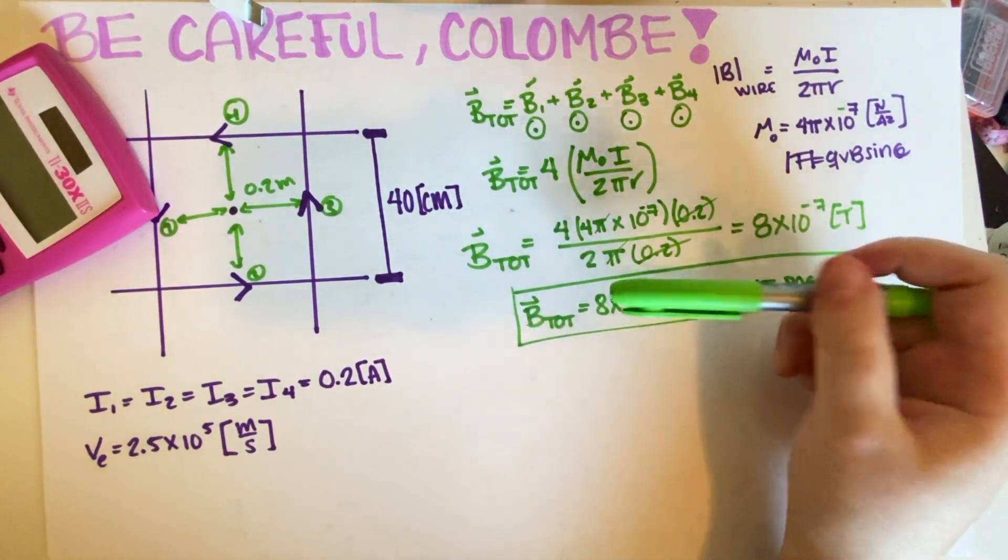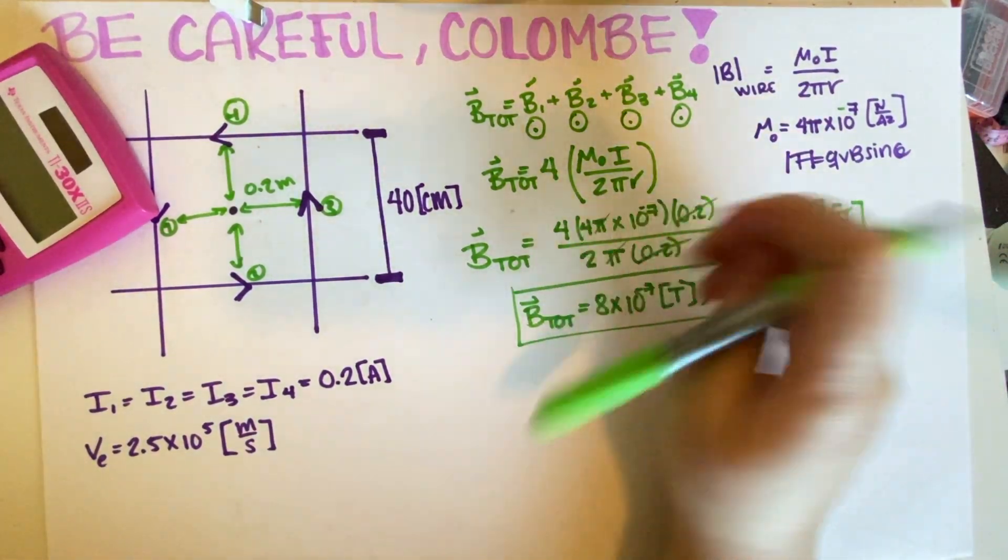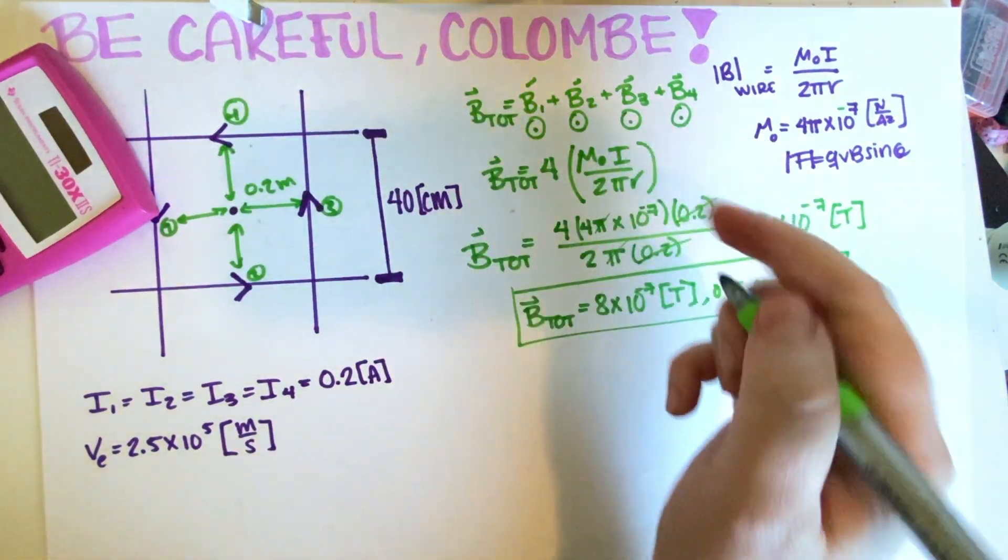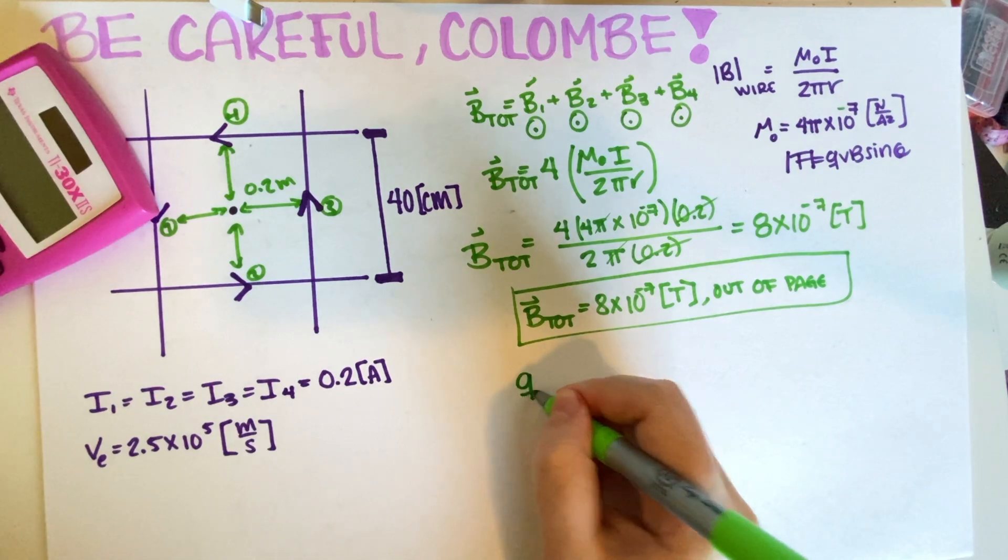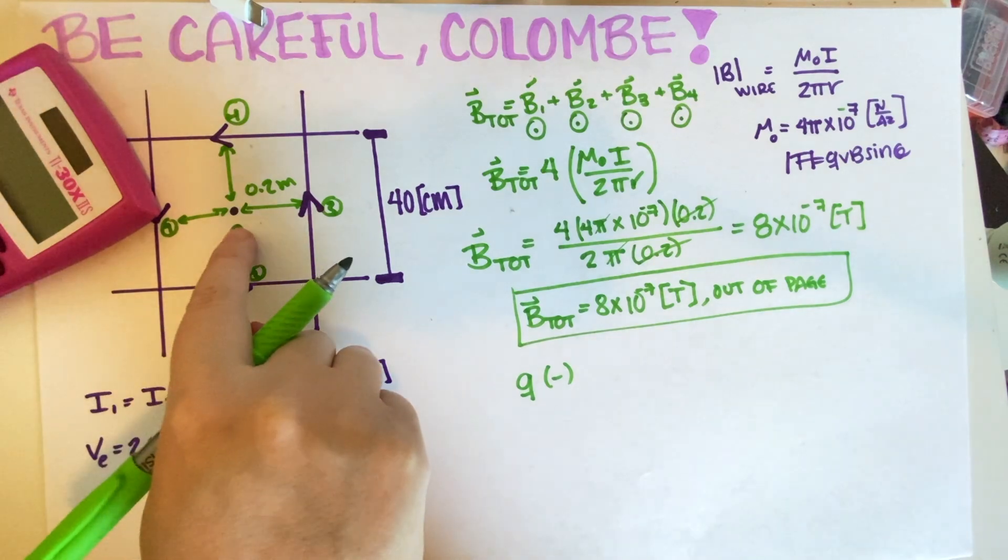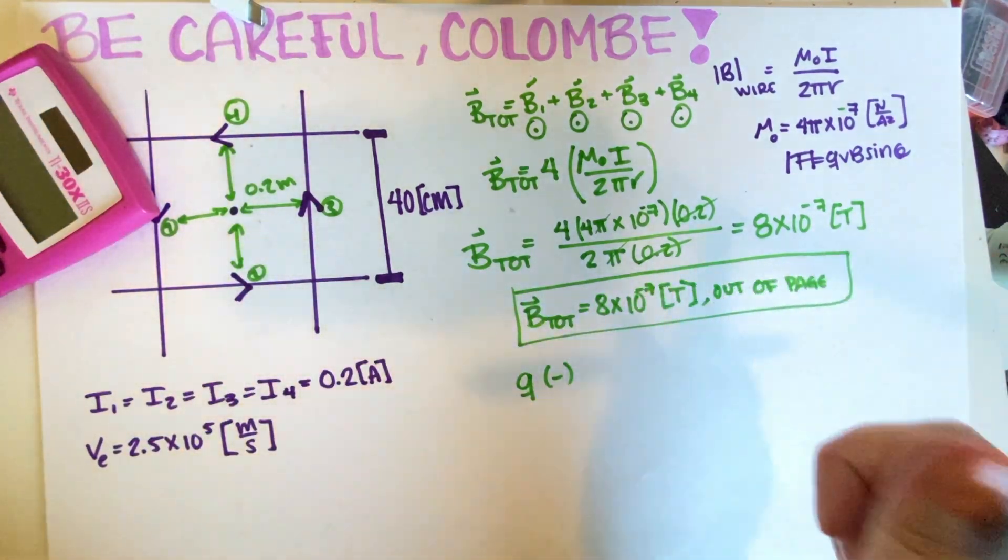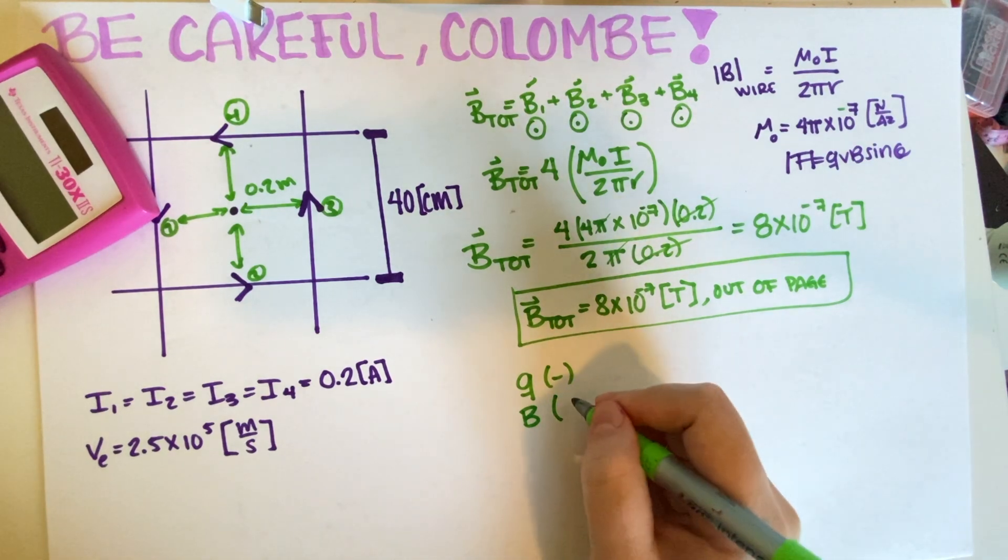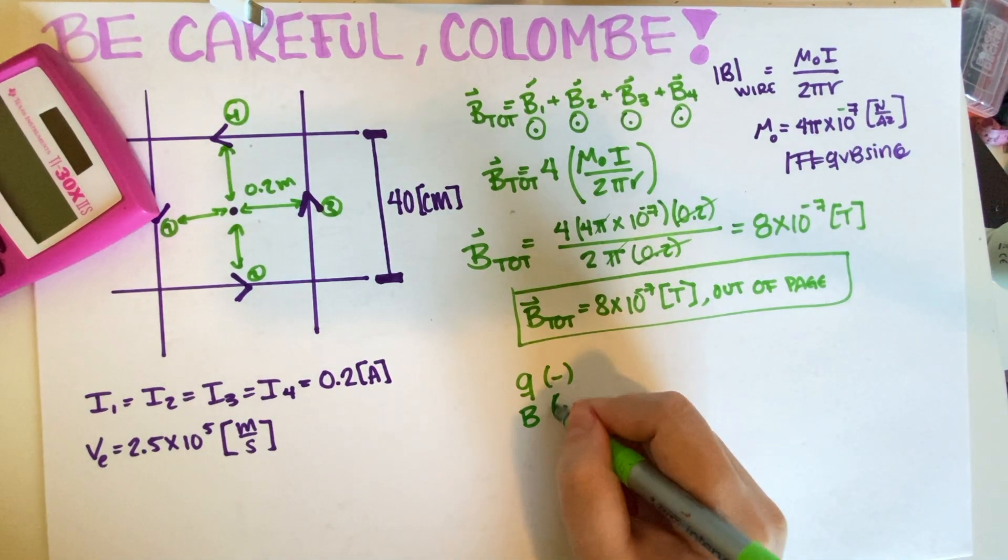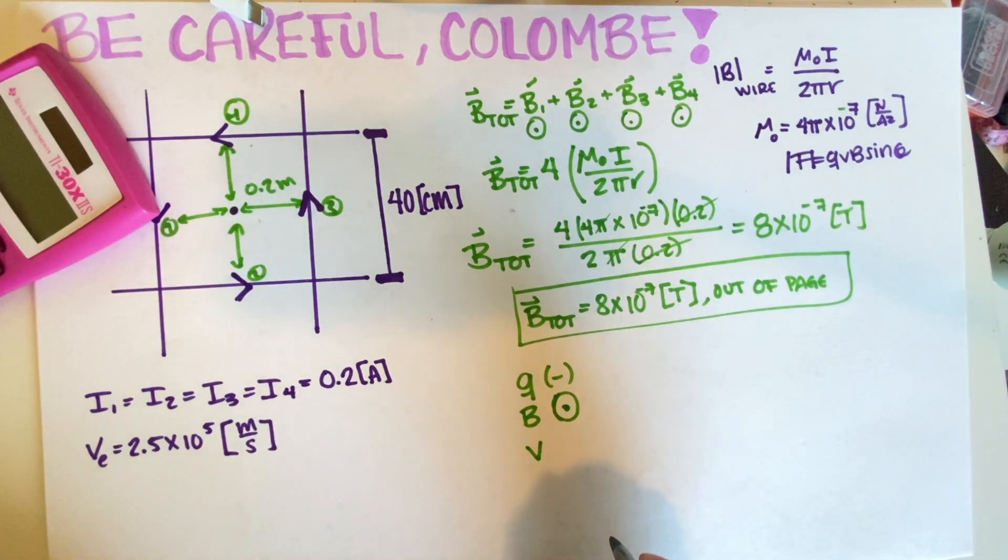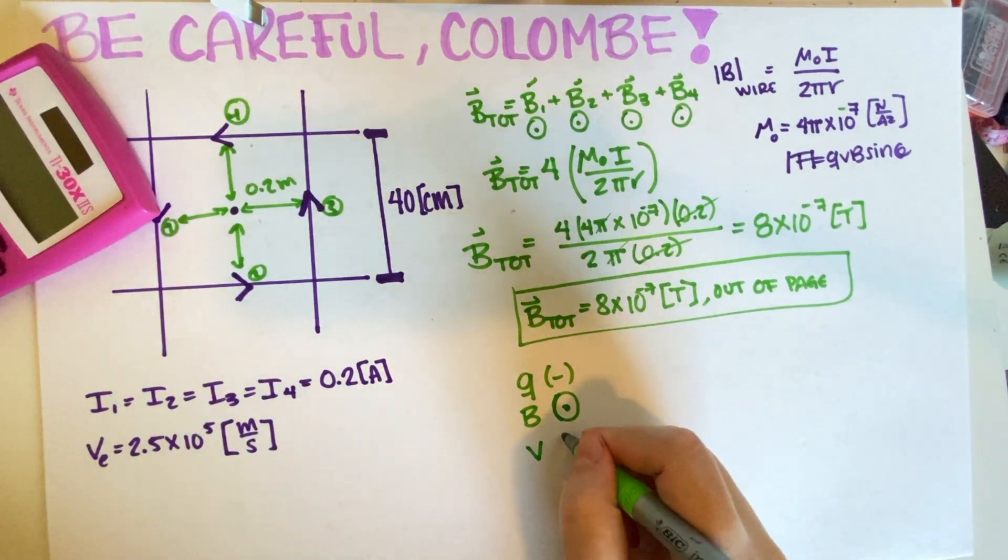So now for part B, what they are saying is, okay, so now you are actually putting an electron over here. So we have an electron with negative charge, and it's feeling this magnetic field, a magnetic field that is going out of the page. And the electron is moving in which direction. The electron is moving into the plane. So cross.